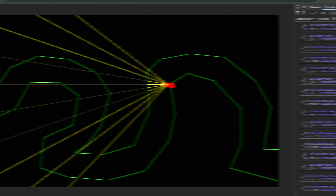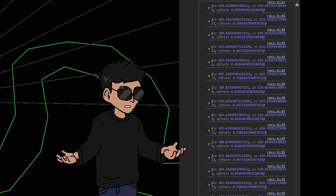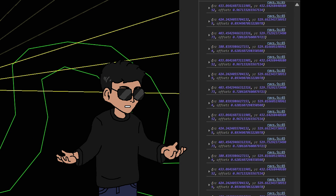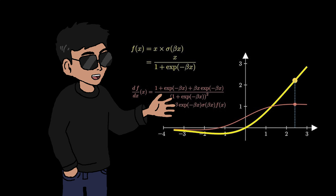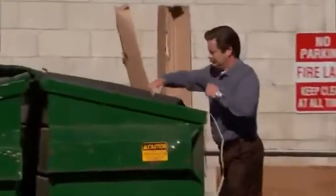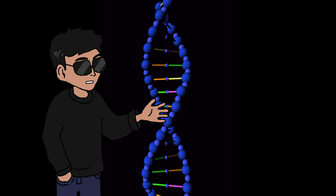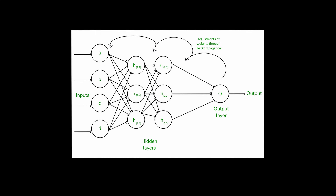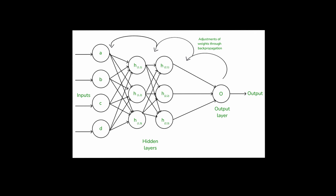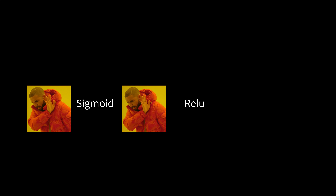It looks good — if we look at the console you can actually see the points of intersections, so these will be our inputs. For the nerds watching: we're not going to use fancy activation functions because we don't need them. Our genetic algorithm will use mutation and natural selection — no backpropagation, no sigmoid, no ReLU, just this.